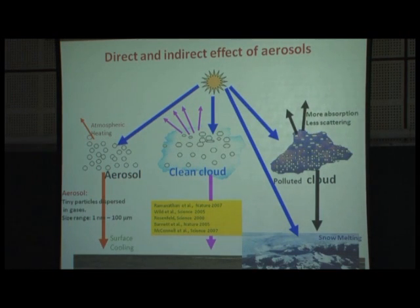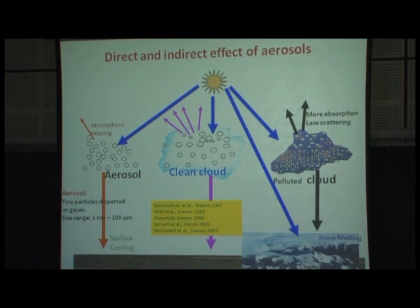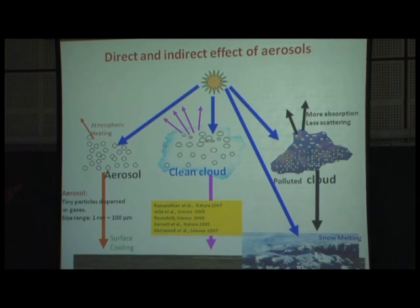Aerosols are ubiquitous in the atmosphere. As solar radiation comes in and interacts directly with particles, it is either scattered or absorbed, and in that way you are changing the radiation budget in every layer of the atmosphere. By doing so, you are forcing the climate over a small or long time scale — that is what we call the direct effect. If you have absorbing aerosols in the atmosphere, that layer will warm, and in that process it could also cool the surface.